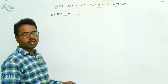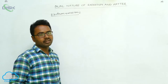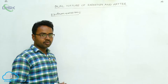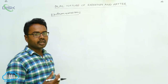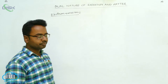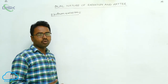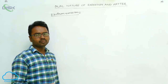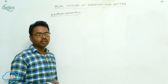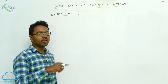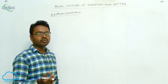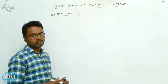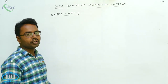Let us understand particle nature of electromagnetic waves from the topic of electron emission. Every solid contains free electrons. When these free electrons try to come out from the surface of the metal, they are attracted back to the solid surface, because when an electron leaves the atom, the atom becomes a positive ion, and this positive ion attracts the electron back.